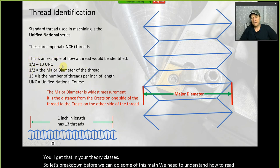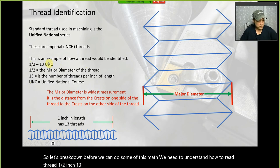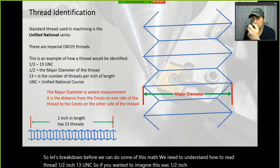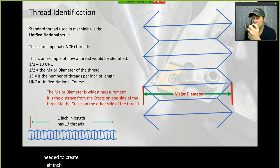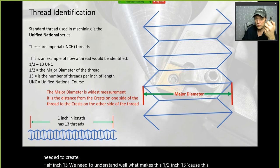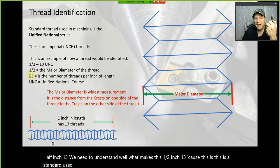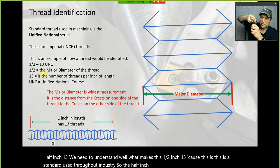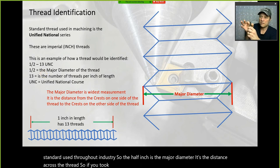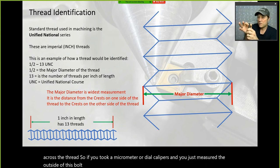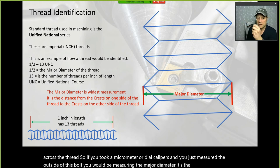Before we can do some of this math, we need to understand how to read a thread. A half-inch 13 UNC: the half-inch is the major diameter — it's the distance across the thread. If you took a micrometer or dial calipers and measured the outside of the bolt, you'd be measuring the major diameter — the largest width.